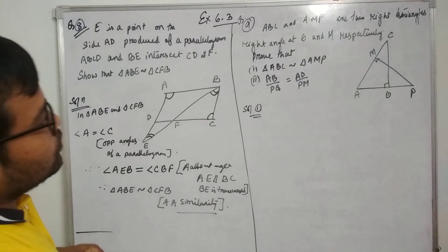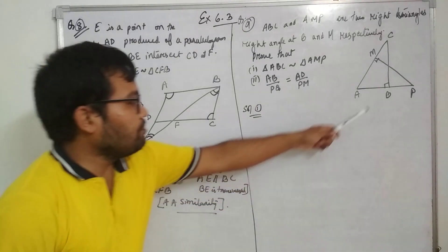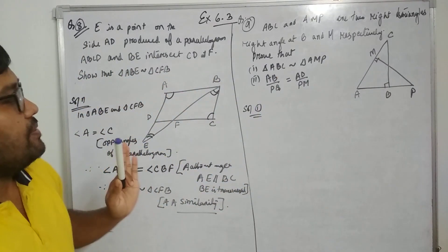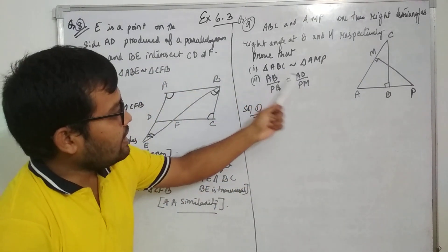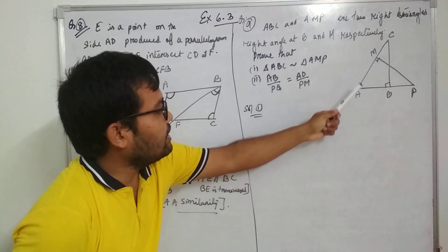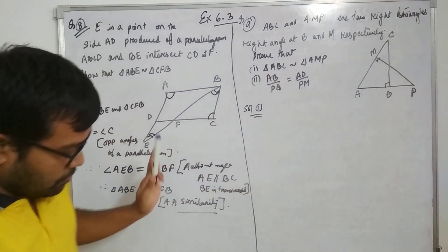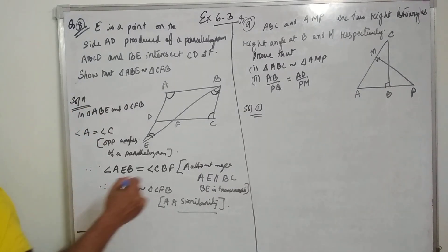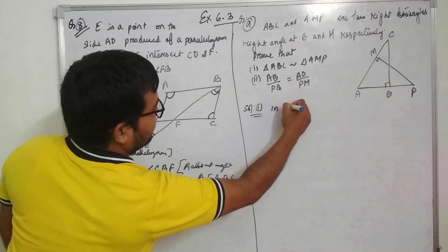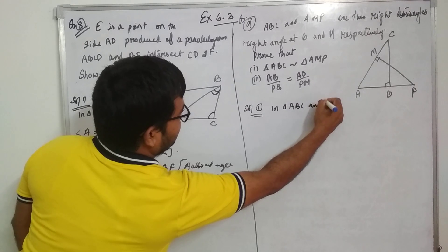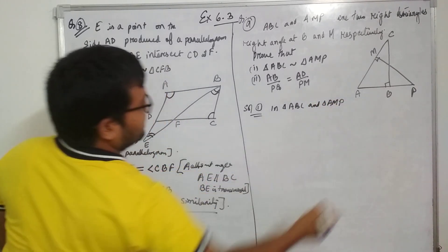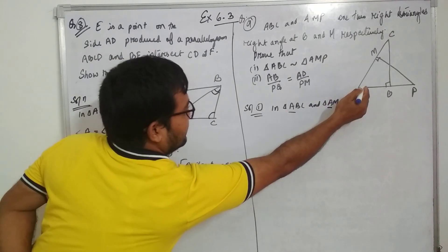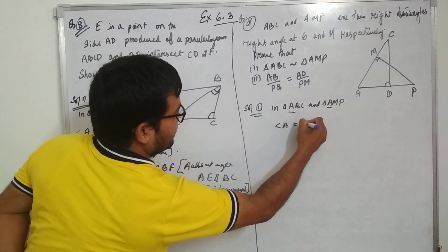ABC and AMP are two right triangles. Angle B is the right angle means 90 degree, angle M is the right angle which is 90 degree. Triangle ABC and triangle AMP we need to prove. In triangle ABC and triangle AMP we will take this. Angle A and angle A, it is a common angle. Angle A equal to angle A, common in both triangles.